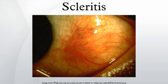Anterior scleritis is of two types: non-necrotizing and necrotizing. Non-necrotizing scleritis is the most common, and is further classified into diffuse and nodular type based on morphology. Necrotizing scleritis accounts for 13% of the cases and can occur with or without inflammation.